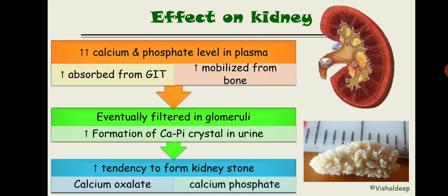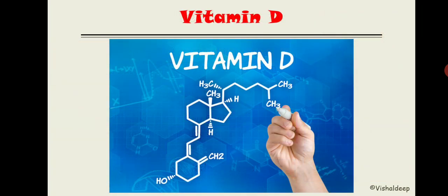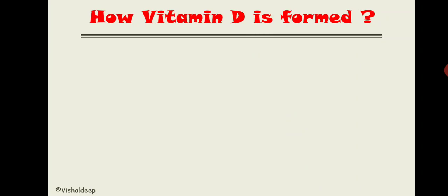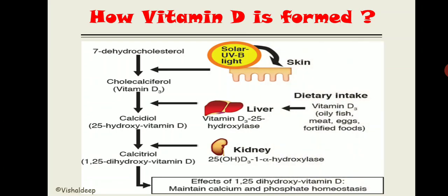Now let's discuss vitamin D. The structure of vitamin D is similar to cholesterol — vitamin D is formed by altering cholesterol. The precursor is 7-dehydrocholesterol, which is cholesterol dehydrated at position 7.